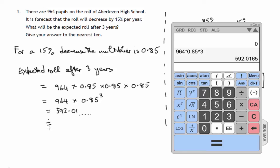We're asked to give it to the nearest 10. That's the 10's column there. We're chopping a 2 off. The 9 remains as a 9.